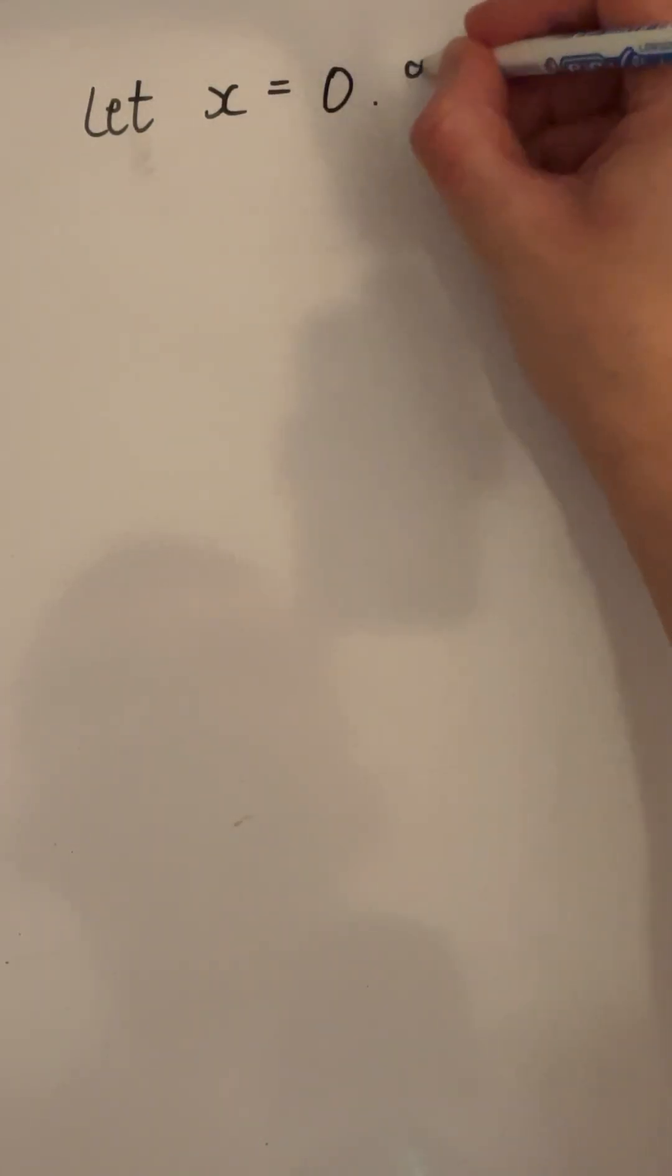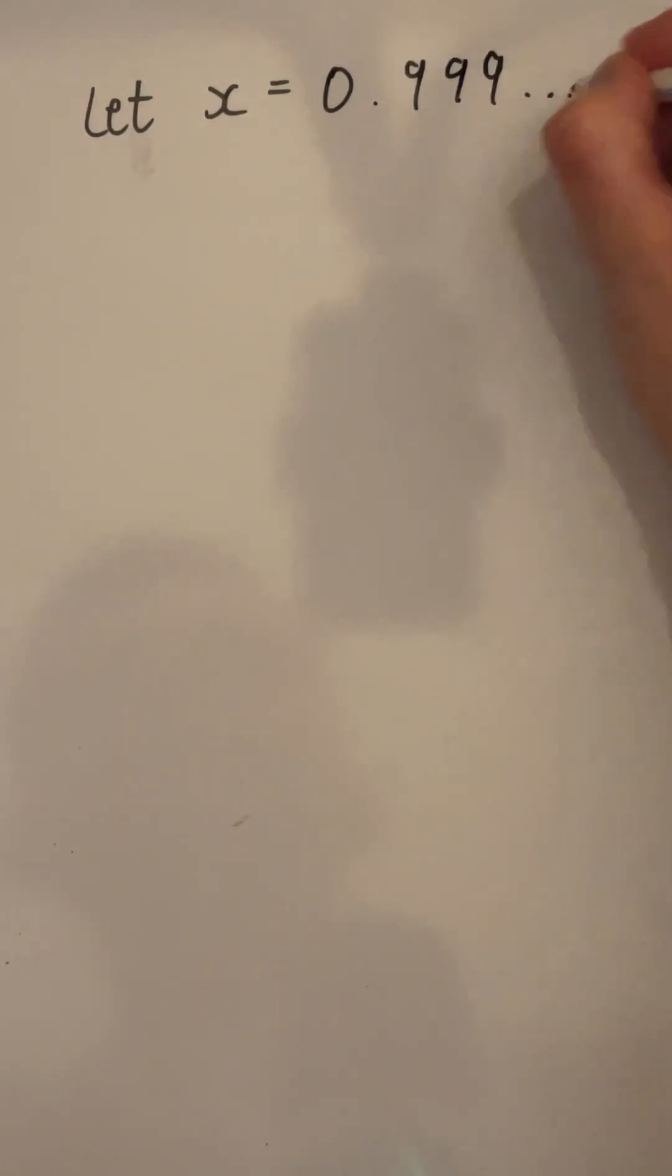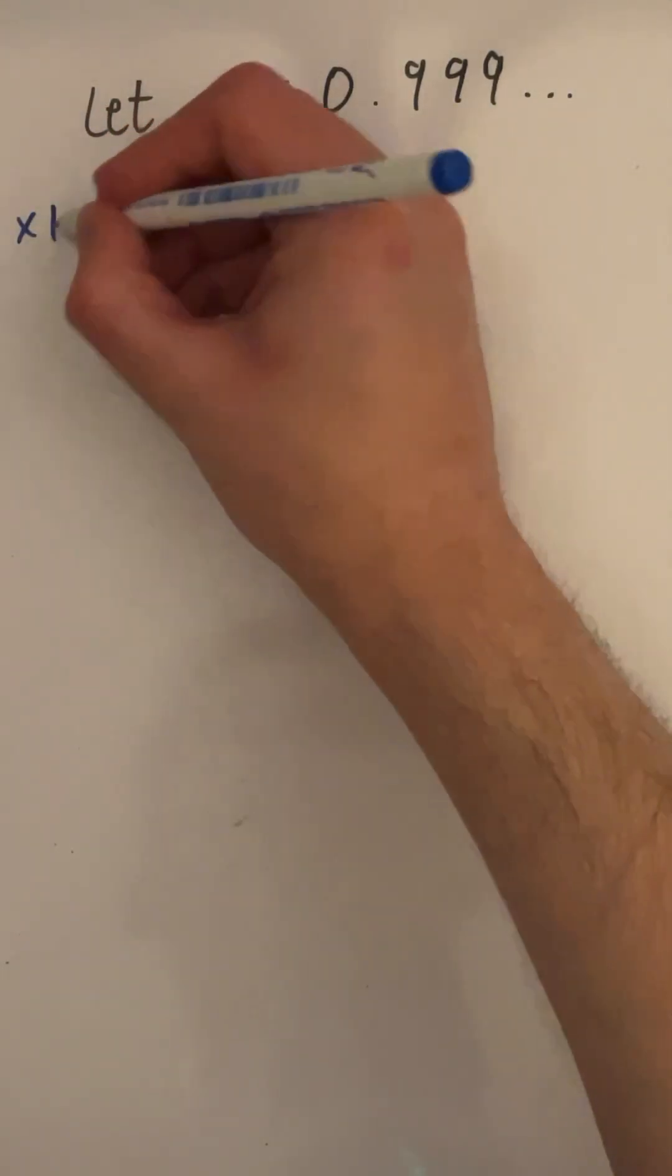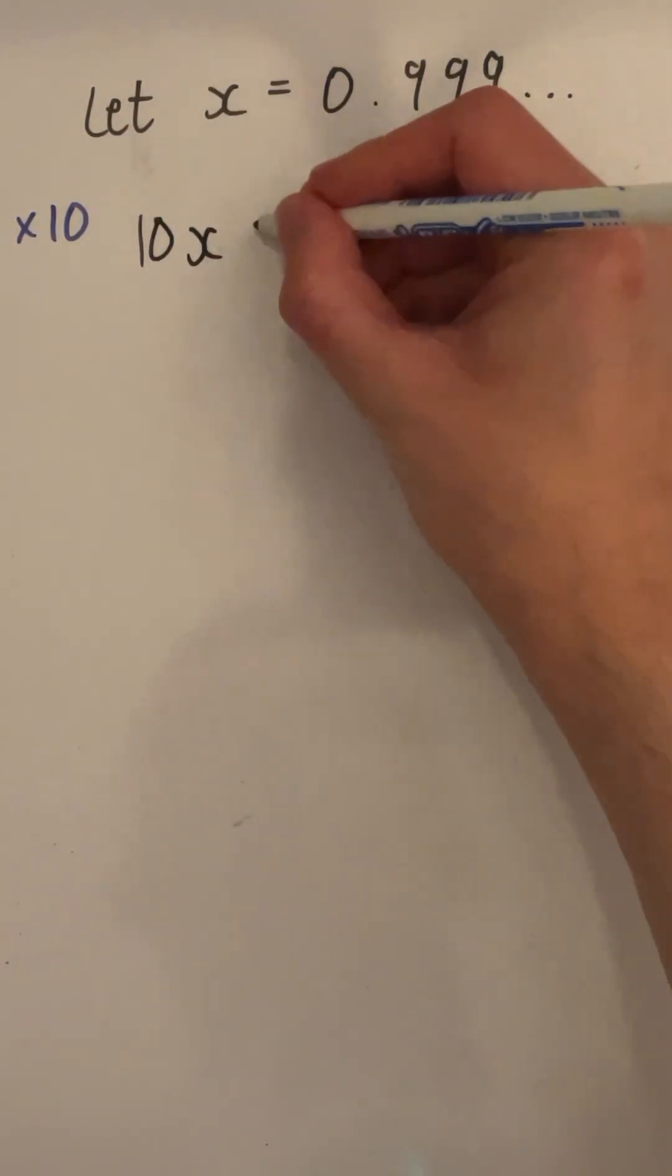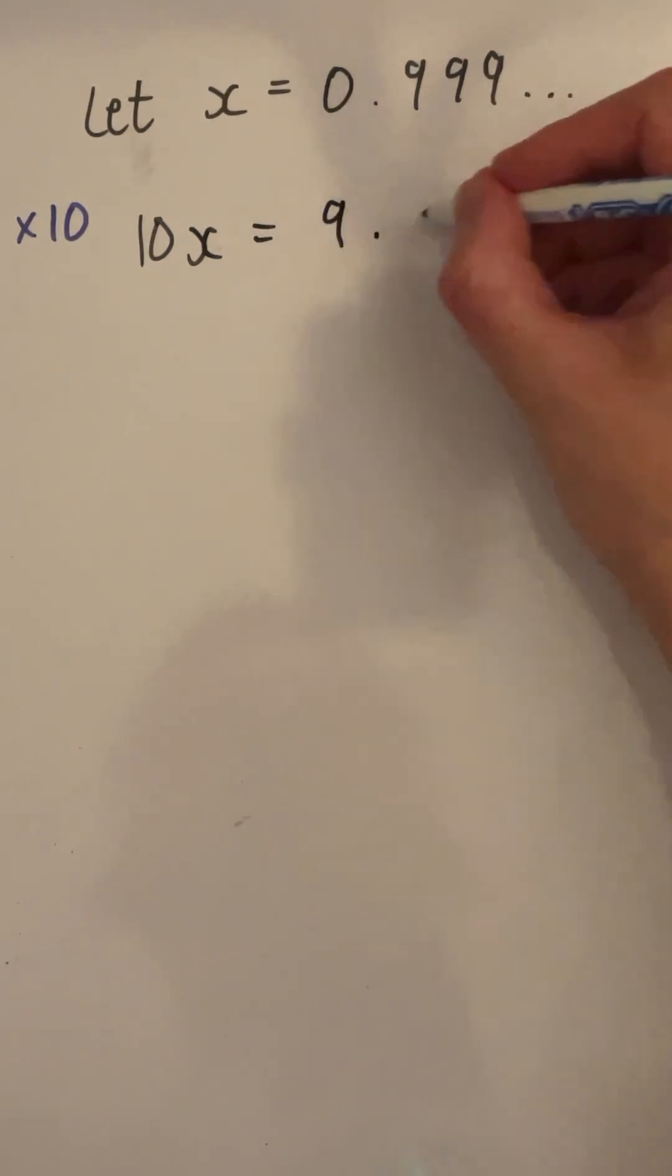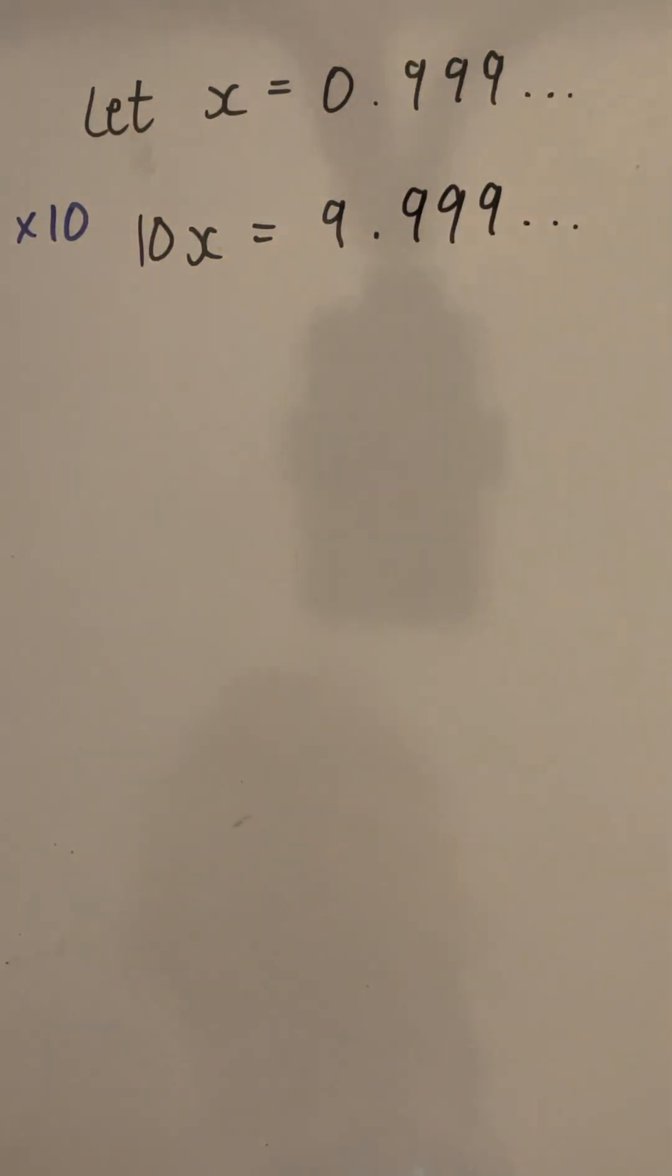Well, here's a fun little proof. If we begin by taking the variable x and setting it equal to 0.999 recurring, then multiply it by 10, we get 10x is equal to, we'll move the decimal point over, 9.999 recurring.